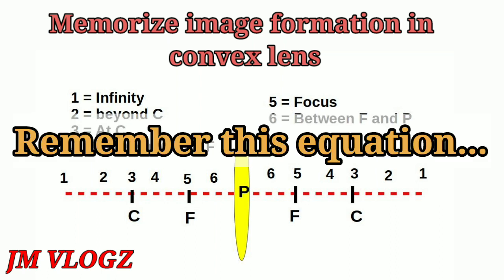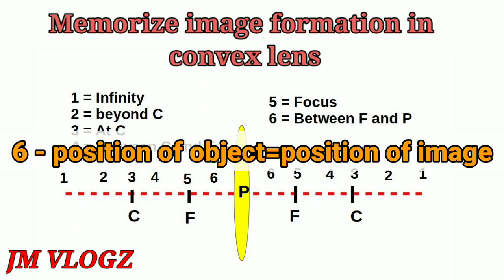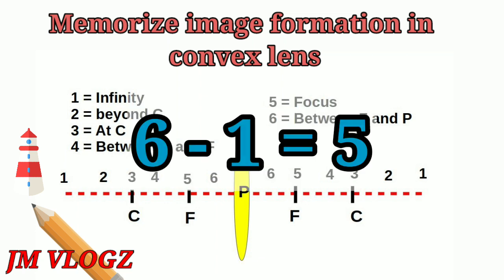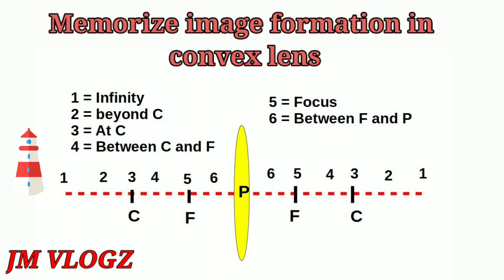The equation is: 6 minus the position of the object equals the position of the image. We check this for different positions. Taking position 1 — that means the object is at infinity — 6 minus 1 equals 5. Position 5 is the focus, so the image is formed at the focus when the object is at infinity.